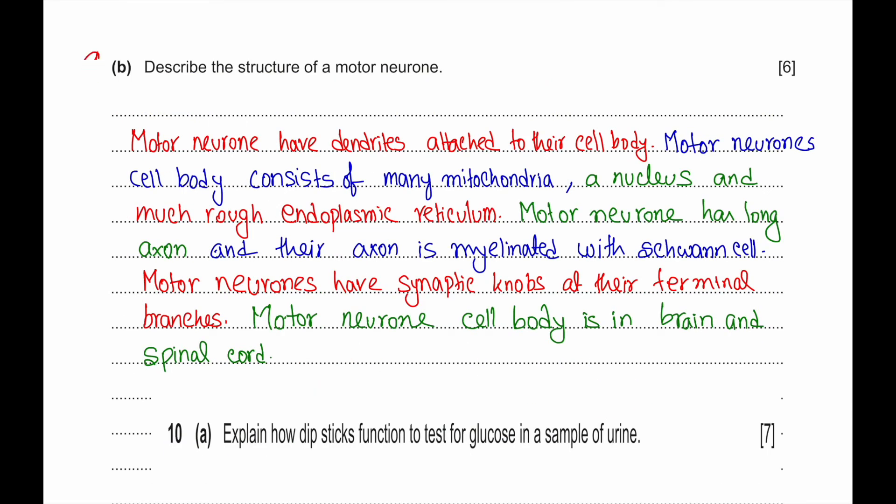Part 9b: Describe the structure of a motor neuron. Motor neurons have dendrites which are attached to its cell body. The motor neuron's cell body consists of many mitochondria, a nucleus, and a lot of rough endoplasmic reticulum. Motor neurons have long axons and their axons are myelinated, meaning they are covered with Schwann cells. Motor neurons have synaptic knobs at their terminal branches where they terminate with neuromuscular junctions or glands. The motor neuron's cell body is in the brain and spinal cord, and the ending portion is usually in the neuromuscular junction or in the glands.